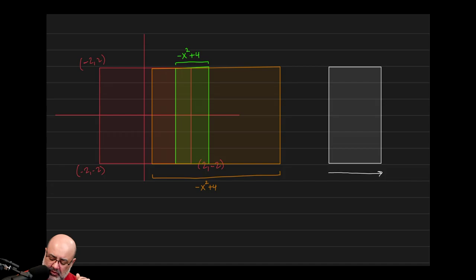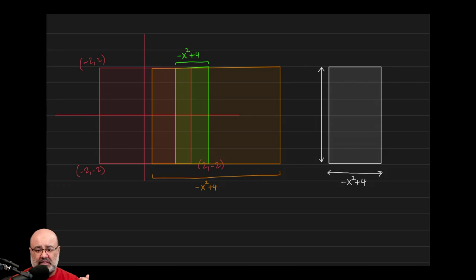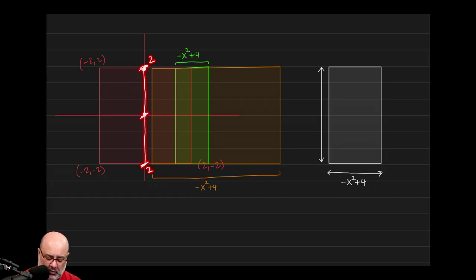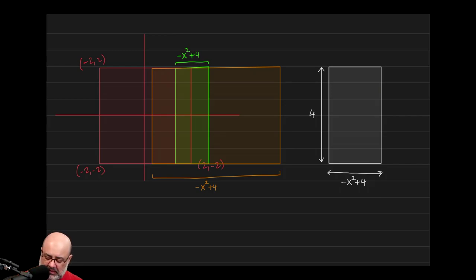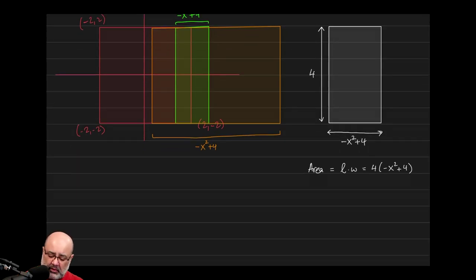The height coming out of the screen is always −x² + 4. The base width, however, never changes — it's always sitting on the square. The y-coordinate goes from −2 to 2, so the base width is 2 + 2 = 4. The area of cross section is length × width = 4(−x² + 4).